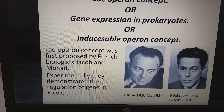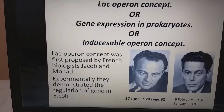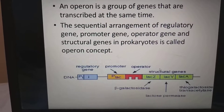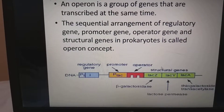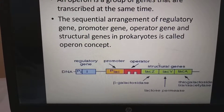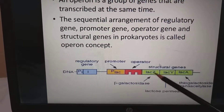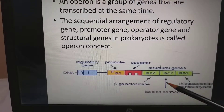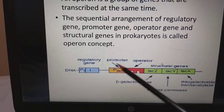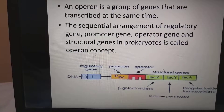Lac operon concept, also called gene expression in prokaryotes or inducible operon concept — all are the same. The lac operon concept was first proposed by French biologists Jacob and Monod, who experimentally demonstrated the regulation of genes in Escherichia coli. An operon is a group of genes that are transcribed at the same time. The sequential arrangement consists of a regulatory gene, promoter gene, operator gene and structural genes — this is the operon concept in prokaryotes.